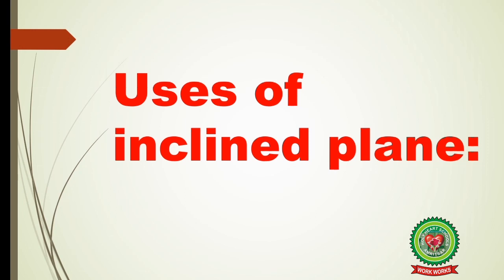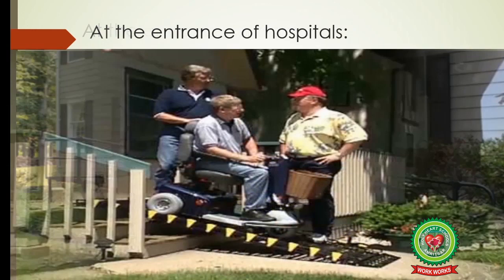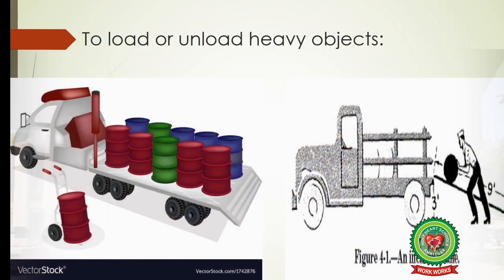Now, what are the uses of inclined planes? An inclined plane is used at the entrance of homes to move vehicles inside without much effort. It is also used at the entrance of hospitals to move patients with wheelchairs or stretchers in and out easily. It is also used to load or unload heavy objects — for example, barrels of oil or coal tar are loaded or unloaded from trucks using an inclined plane.